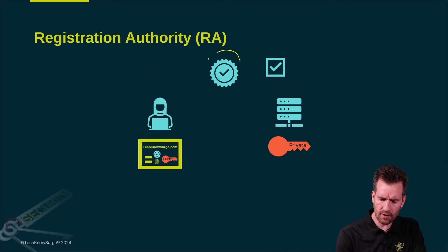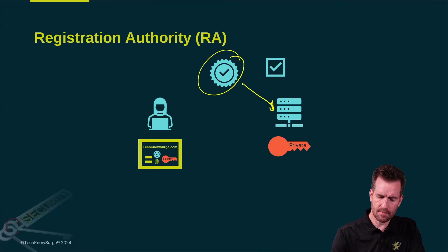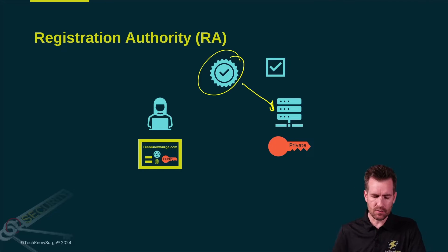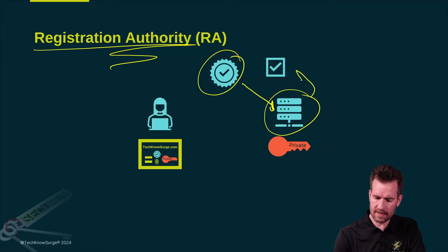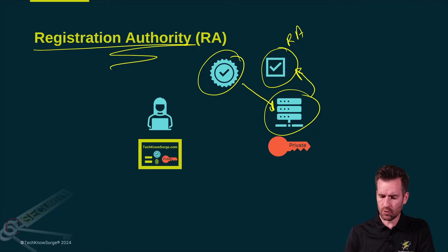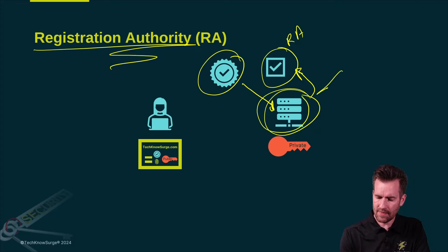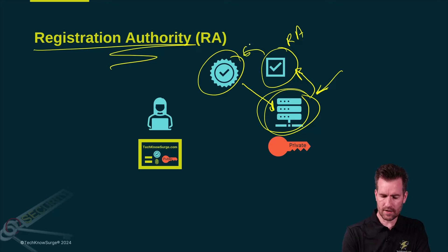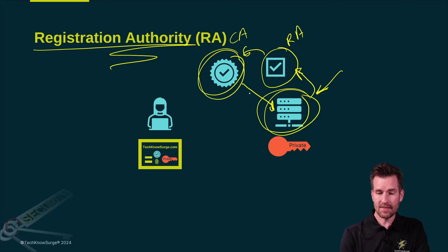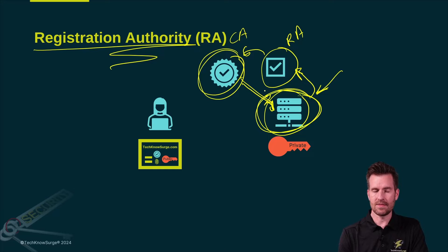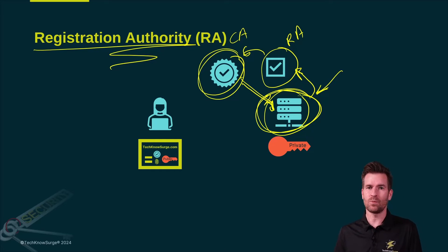So how would a certificate authority trust some sort of servers? We're going to use a registration authority. This set of servers is going to turn in some data into a registration authority, and that registration authority is going to go through a process to confirm that this is legitimate. Once the registration authority gives the thumbs up to the CA, the CA will then trust this server. It looks a little different when we get into the process, but essentially that's what's happening here.